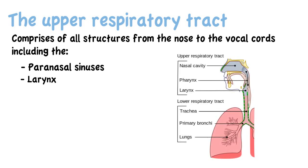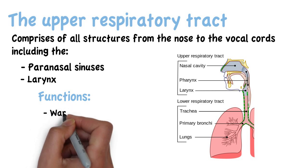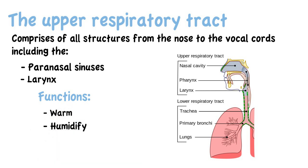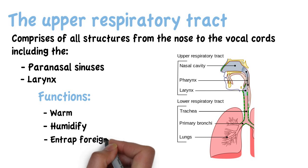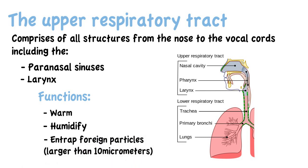The upper respiratory tract serves the function of warming and humidifying inspired air, so by the time it reaches the trachea, it is at body temperature and fully humidified. It also serves the function of entrapping any foreign particles that are larger than 10 micrometers in size, preventing them from reaching the lungs.